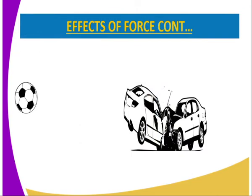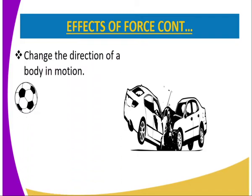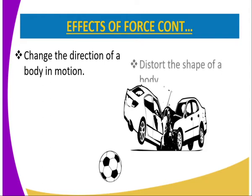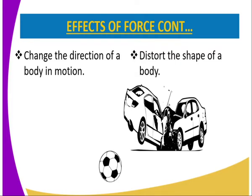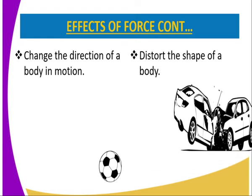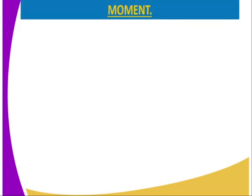Effect number three on force: it changes the direction of a body in motion. For instance, a spinning ball - it changes its direction due to application of force. Number four, the last effect of force: it distorts the shape of bodies. Once bodies collide and they have an impact on one another, they are dismantled. They change their shape - that is, their shape is no longer the same, which is an effect of force.